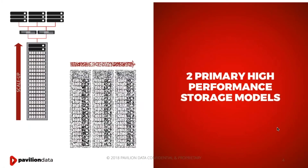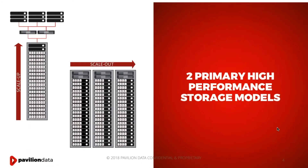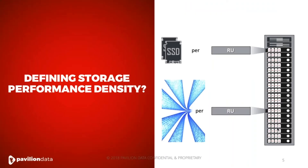And that's true in technology. Today we have two primary performance storage models: scale up and scale out. They're different, and VR Satish will talk about that later. But generally, they each have an issue when it comes to storage performance density. What is storage performance density? You know what capacity density is — the amount of terabytes per rack unit. Well, performance density is the amount of IOPS and bandwidth, or bytes per second per rack unit.